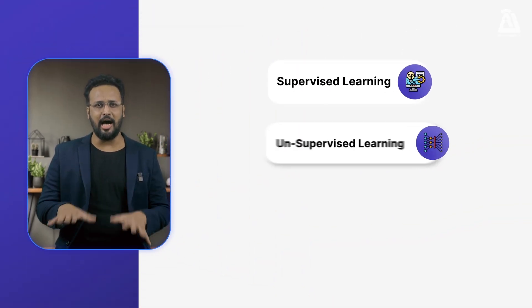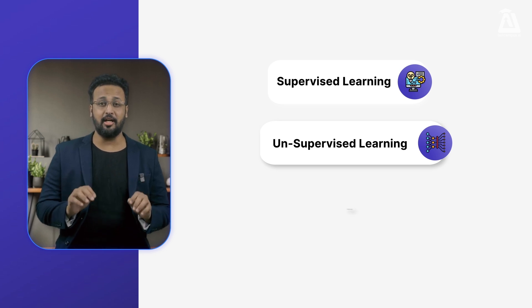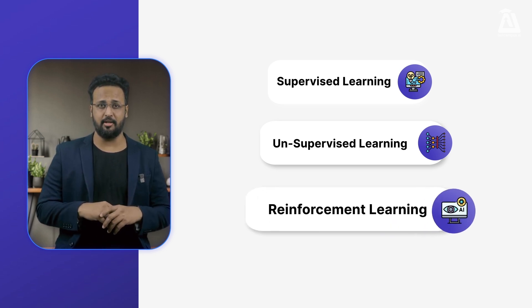Machine learning can mainly be categorized into three distinct types: supervised learning, unsupervised learning, and reinforcement learning.